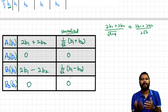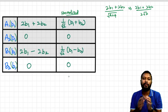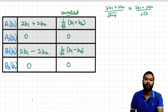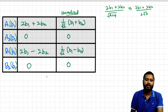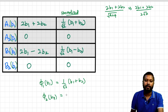Now we normalize. For 2b1 + 2b2: dividing by √(2² + 2²) = √8 = 2√2 gives (2b1 + 2b2)/(2√2). Factoring out 2, we get (1/√2)(b1 + b2). Similarly, normalizing 2b1 - 2b2 gives (1/√2)(b1 - b2). So the final SALCs from the projection operator method are: φ1(b1) = (1/√2)(b1 + b2) and φ2(b1) = (1/√2)(b1 - b2).